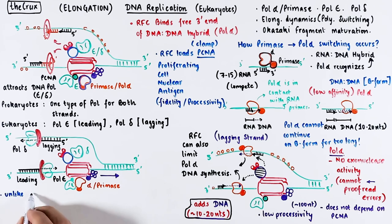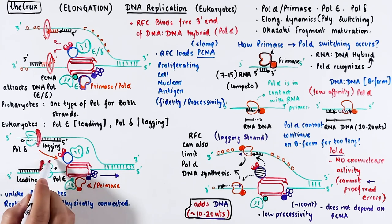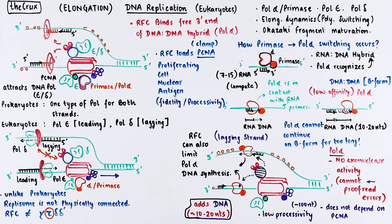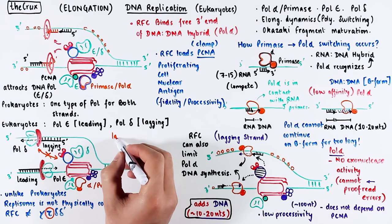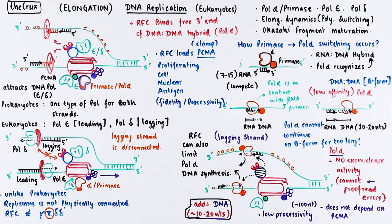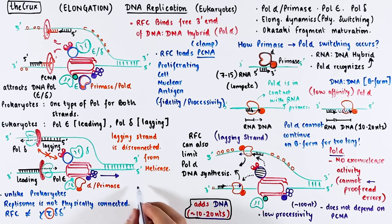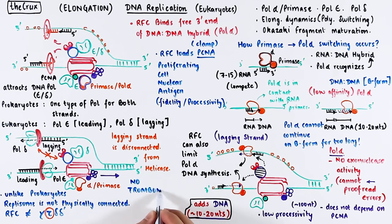Time for another difference between prokaryotes and eukaryotes. In prokaryotes, the replosome was a giant complex physically connected by the tau proteins of the clamp loader. In eukaryotes, the replosome is not physically connected. There are no ponytails in the RFC to tether the lagging and leading strand polymerases with the moving helicase. So what I mean to say is that unlike prokaryotes, the lagging strand synthesis in eukaryotes is disconnected from the rest of the replosome. This leads to the point that the trombone model of elongation does not apply to eukaryotic replosomes.